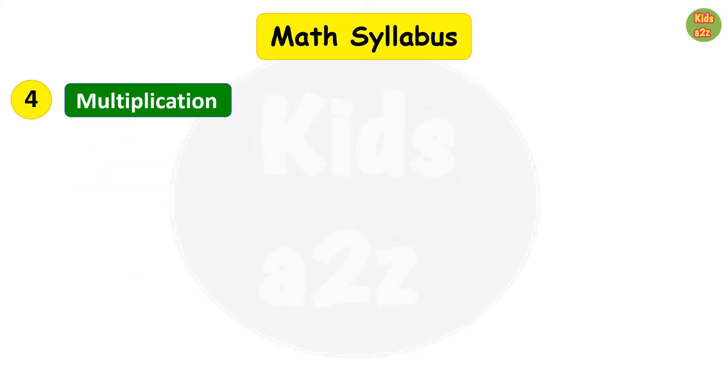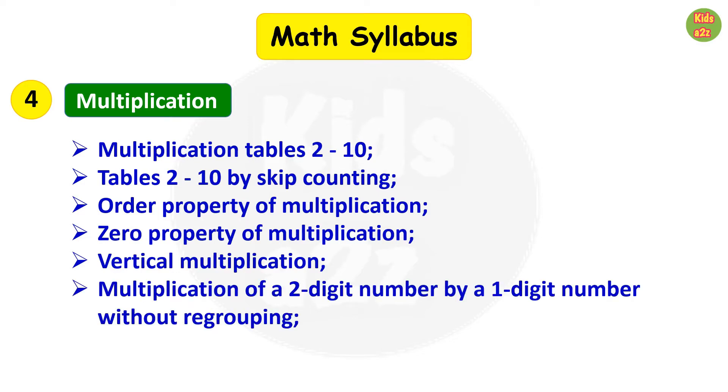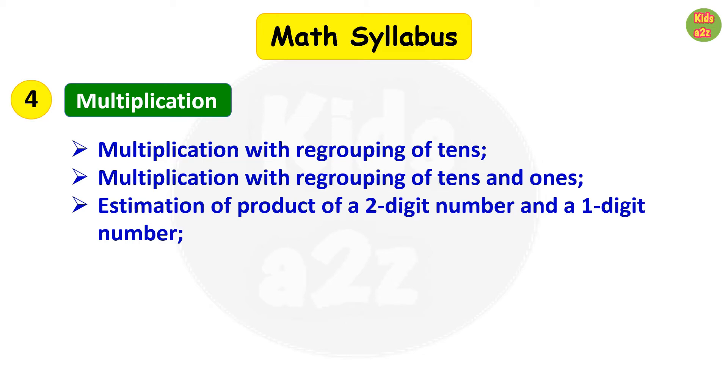Next they will learn multiplication. It includes multiplication tables from 2 to 10, tables from 2 to 10 by skip counting, order property of multiplication, zero property of multiplication, vertical multiplication, multiplication of a two-digit number by a one-digit number without regrouping—example, multiply 21 by 3—multiplication with regrouping of ones, multiplication with regrouping of tens, multiplication with regrouping of tens and ones, and estimation of product of a two-digit number and a one-digit number.